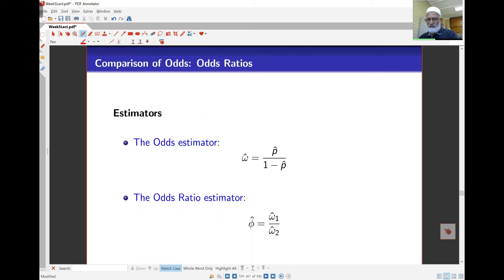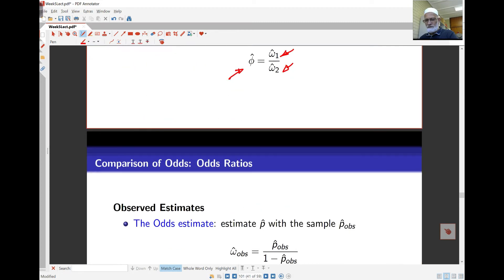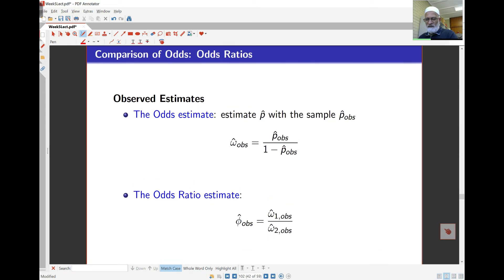So the estimators as we saw with these, the odds estimator is essentially p hat over 1 minus p hat. And the odds ratio estimator is going to be the ratio of two odds, and we give it the symbol phi. And once we get data, we can find the value from the observed values of the data and we can get the observed values of those.